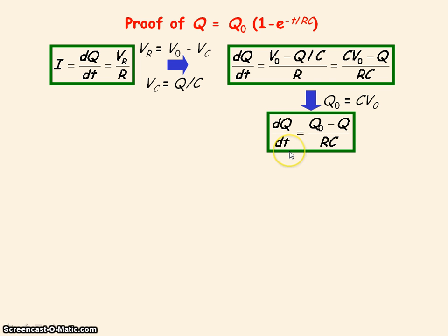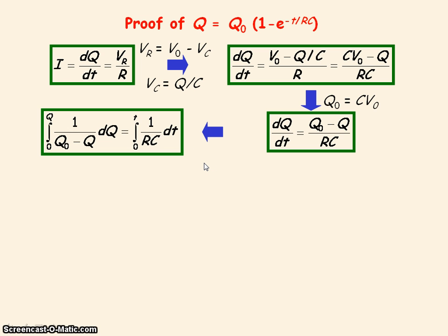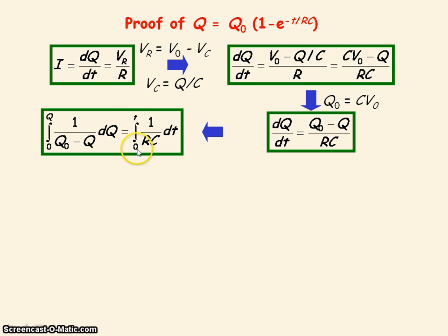If we then rearrange the equation to put all the charge terms on one side and bring dt to the other side, we can now integrate this expression with respect to charge q with the limits of 0 to q, and integrate 1 divided by RC with respect to time t with the limits of 0 to t. These limits apply because when time equals 0, the charge stored on the capacitor is 0, and at time t the charge stored is q.